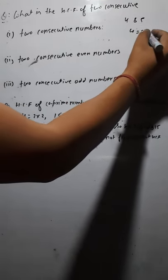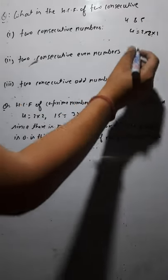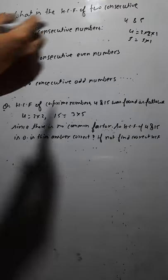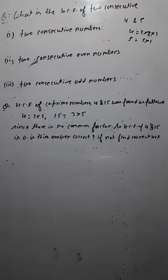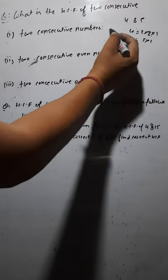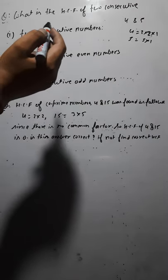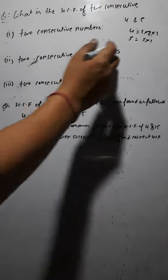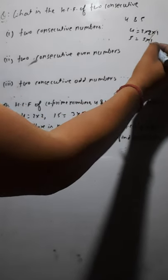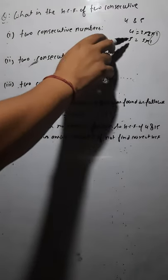What are the factors of four? Factors of four are: two × two × one = four. And factors of five: five is a prime number, so five × one = five. We have taken two consecutive numbers four and five. Prime factorization of four is two × two × one. Prime factorization of five is five × one. If you see the common factor, the common factor is only one. So if you take any two consecutive numbers, you will always find HCF = one.